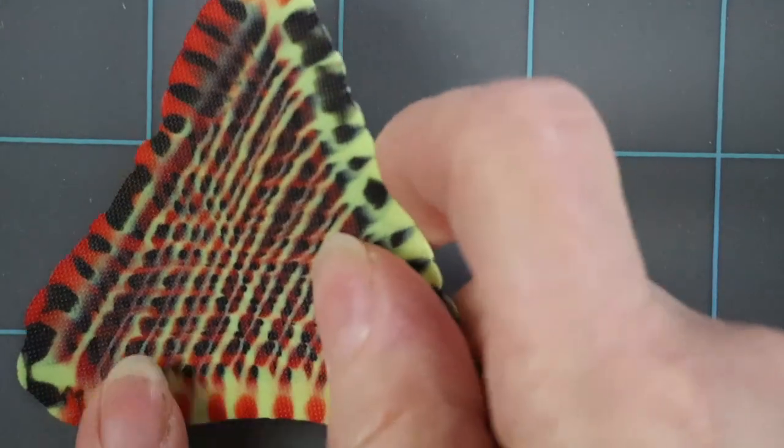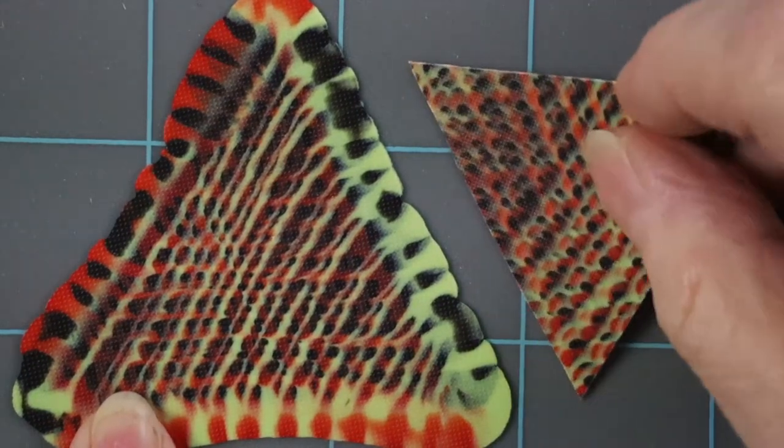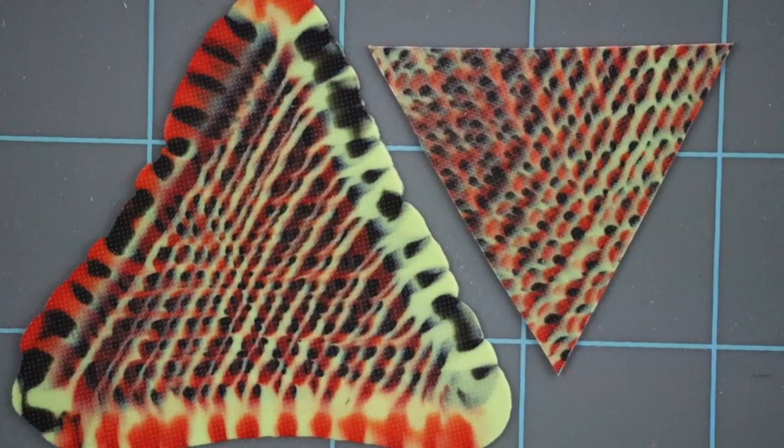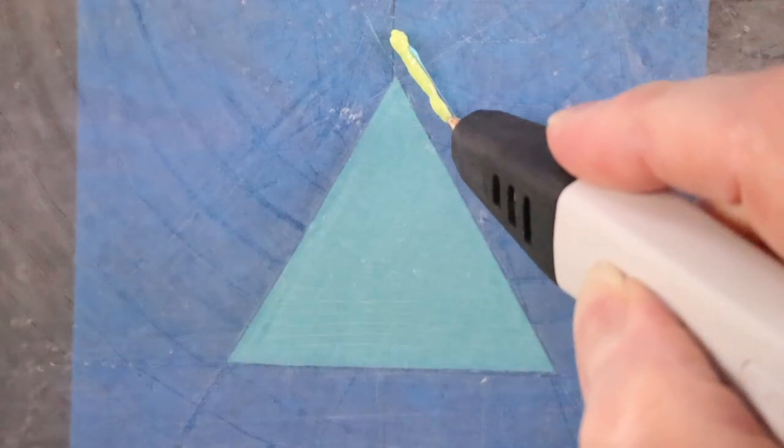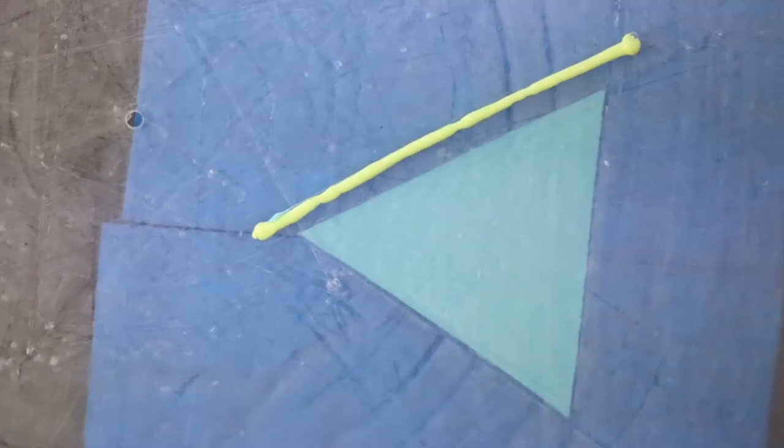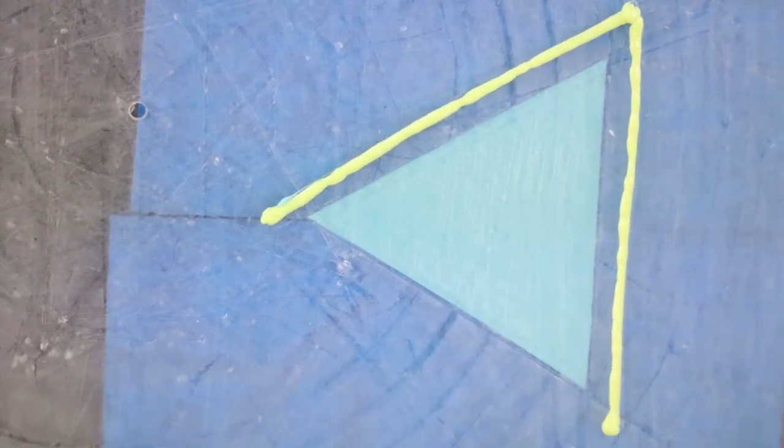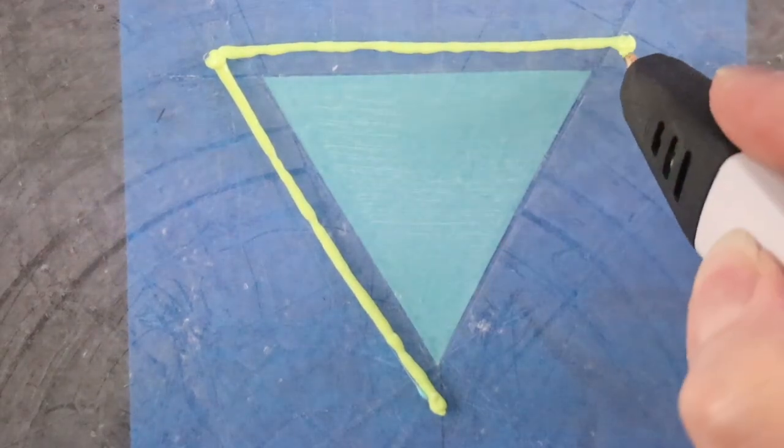We will start super simple with a triangle in three colors, one for each side. How convenient! Make the initial triangle a little bigger than the pattern because the edges will eventually get trimmed off. I will put one color starting from each corner.